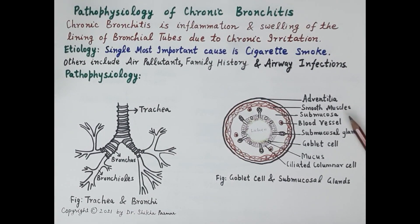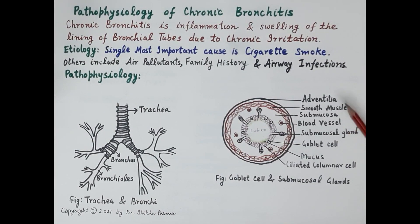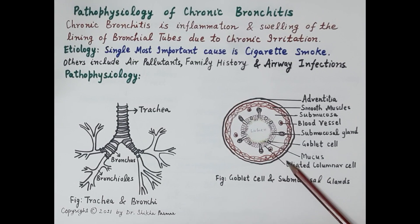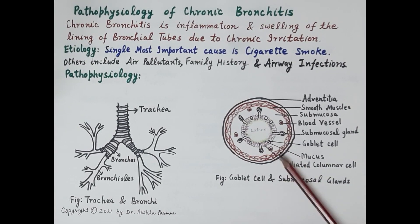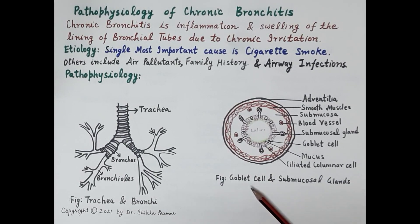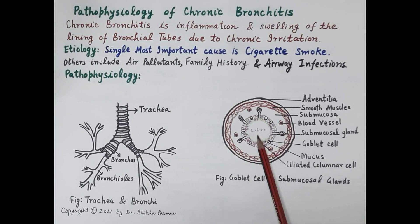In order to understand the pathophysiology of chronic bronchitis, look at this diagram showing a cross section of a bronchial tube. This diagram is made to understand the location of goblet cells and the submucosal glands. In the center of the bronchial tube is the lumen.